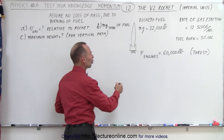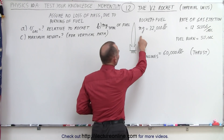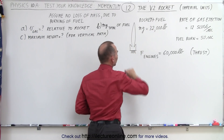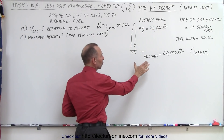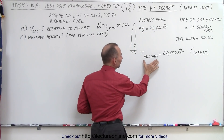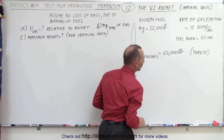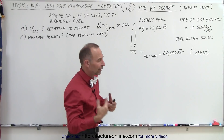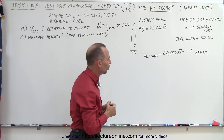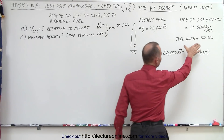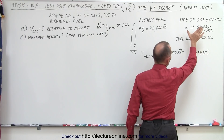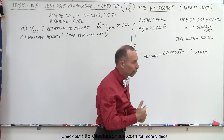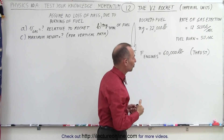We have a rocket that has a total weight of 32,000 pounds, which means the rocket plus the fuel together has a weight of 32,000 pounds. The engines give a force or thrust of 60,000 pounds. Note that all this is in imperial units. We're going to do this problem later in metric units. The fuel burn lasts for 50 seconds, and the ejection of fuel — the gas of the burning fuel — is 12 slugs per second.